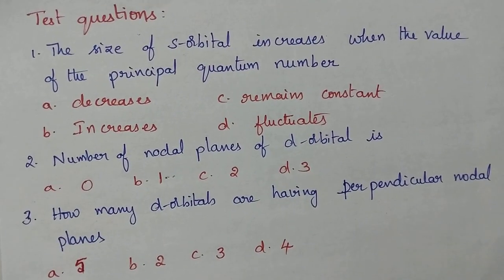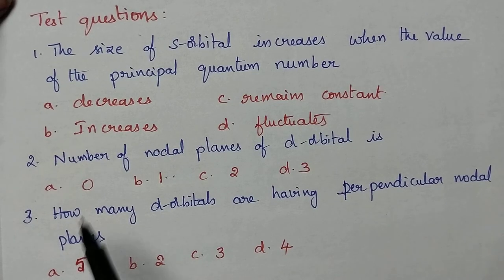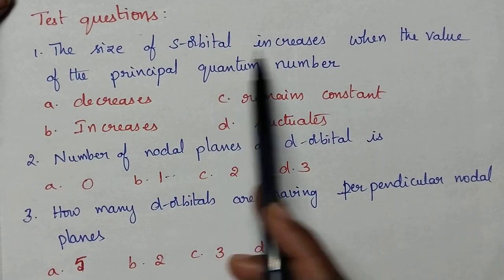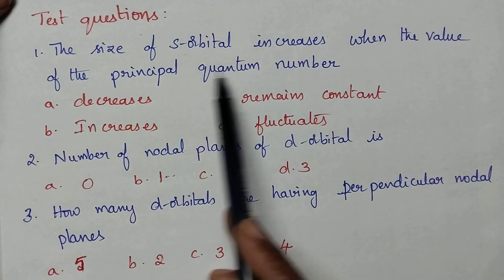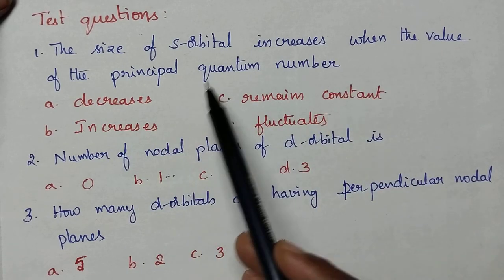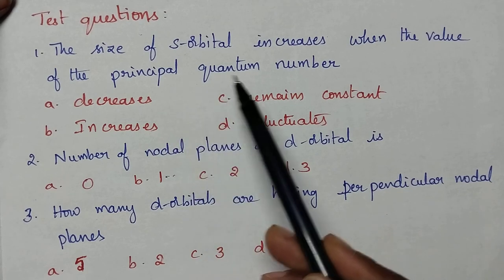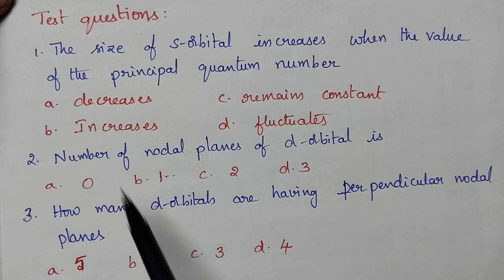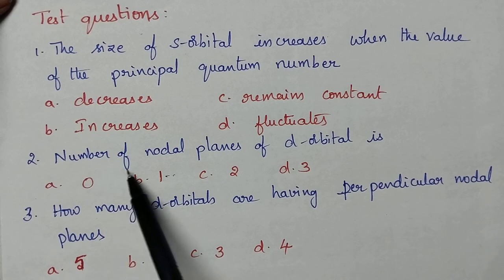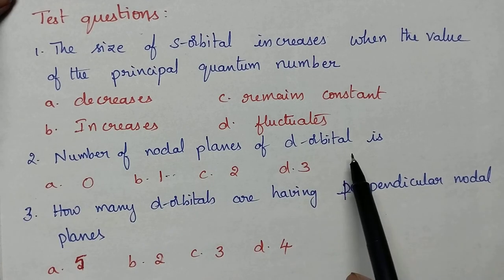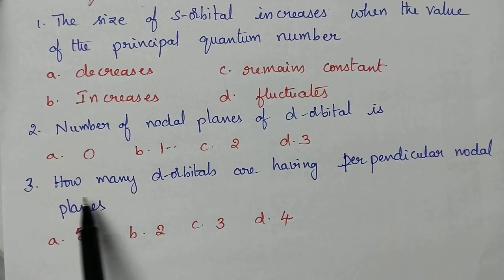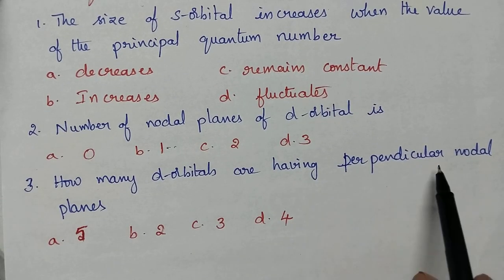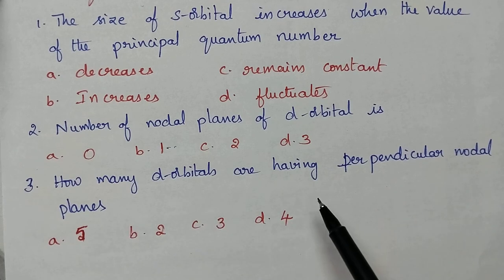Finally, 3 test questions: (1) The size of s orbital increases when the value of the principal quantum number does what? (2) Find the number of nodal planes of d orbital. (3) How many d orbitals are having perpendicular nodal planes? If you like the video, don't forget to like, share and subscribe. Thanks for watching. Have a nice day.